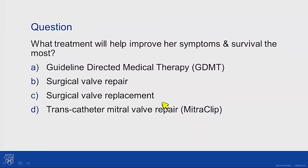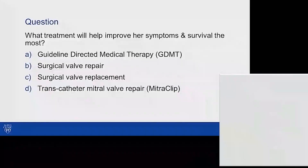So our question for the case, highlighting a main teaching point: what treatment will help her symptoms and survival the most? She has symptomatic severe secondary mitral regurgitation with reduced LV systolic function. Is it guideline-directed medical therapy, surgical valve repair, surgical valve replacement, or transcatheter mitral valve repair with the MitraClip system?